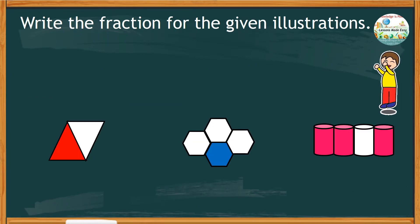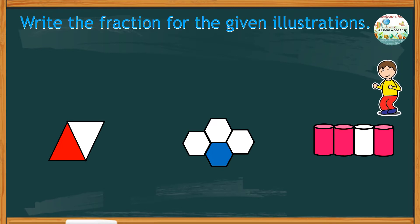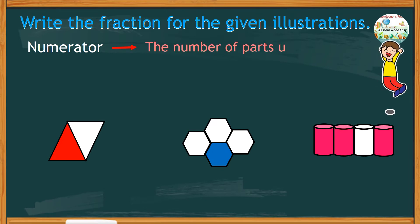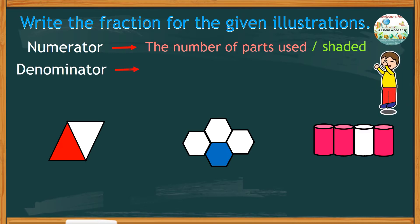Let's do a few more exercises. Write the fraction for the given illustrations. Remember, the number on the top, which is the numerator, must be the number of parts used or shaded. The number below is called the denominator, which is the total number of equal parts.